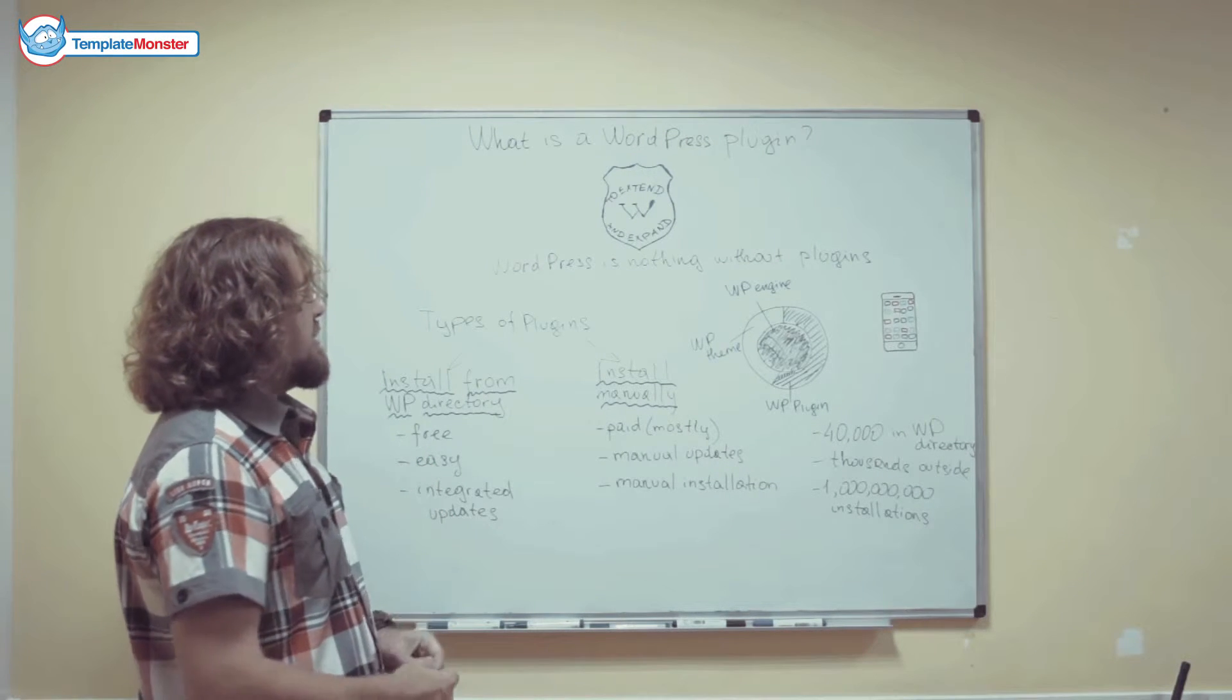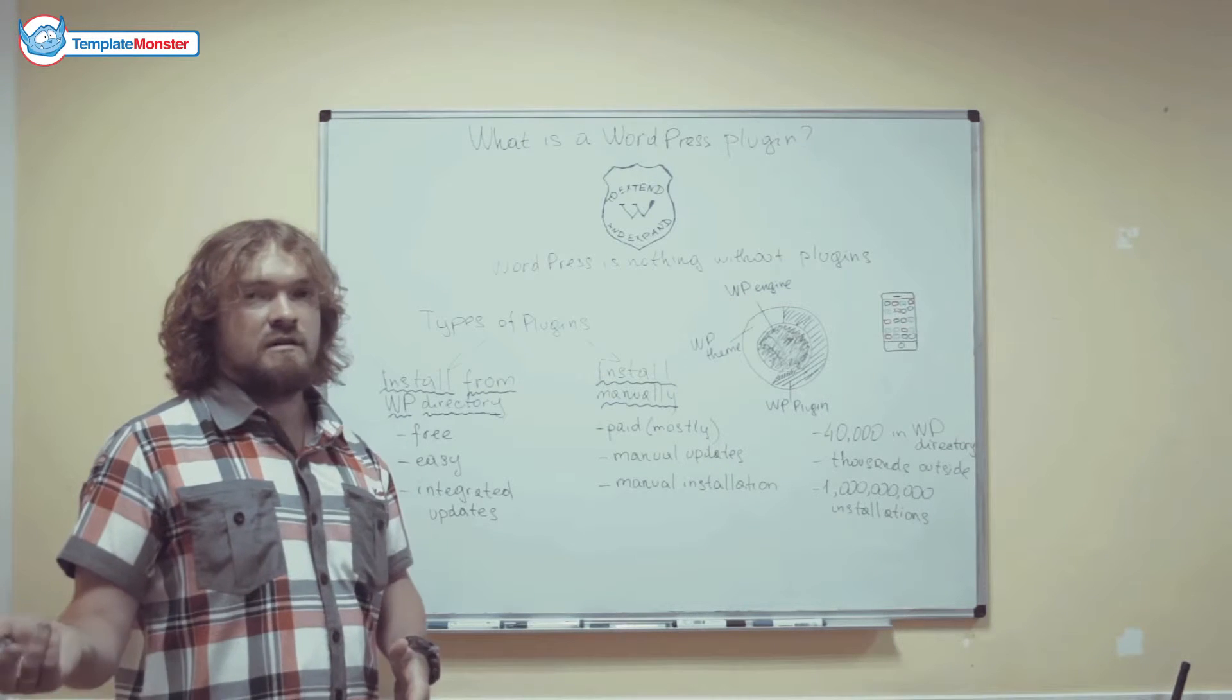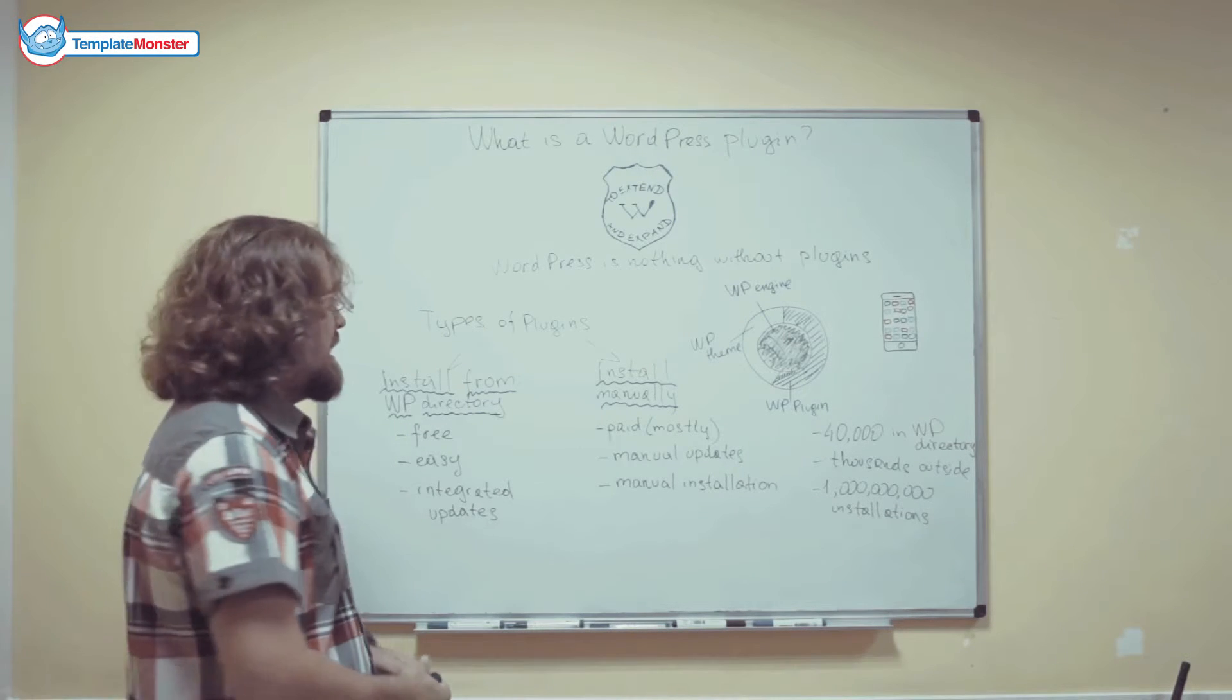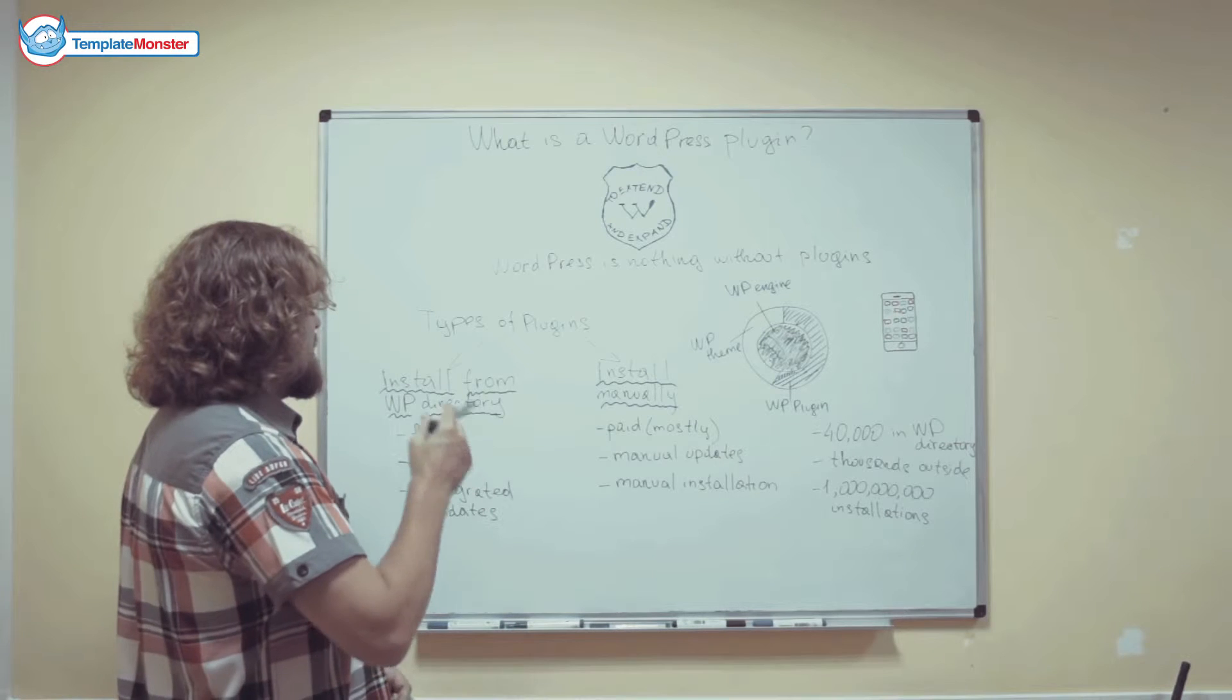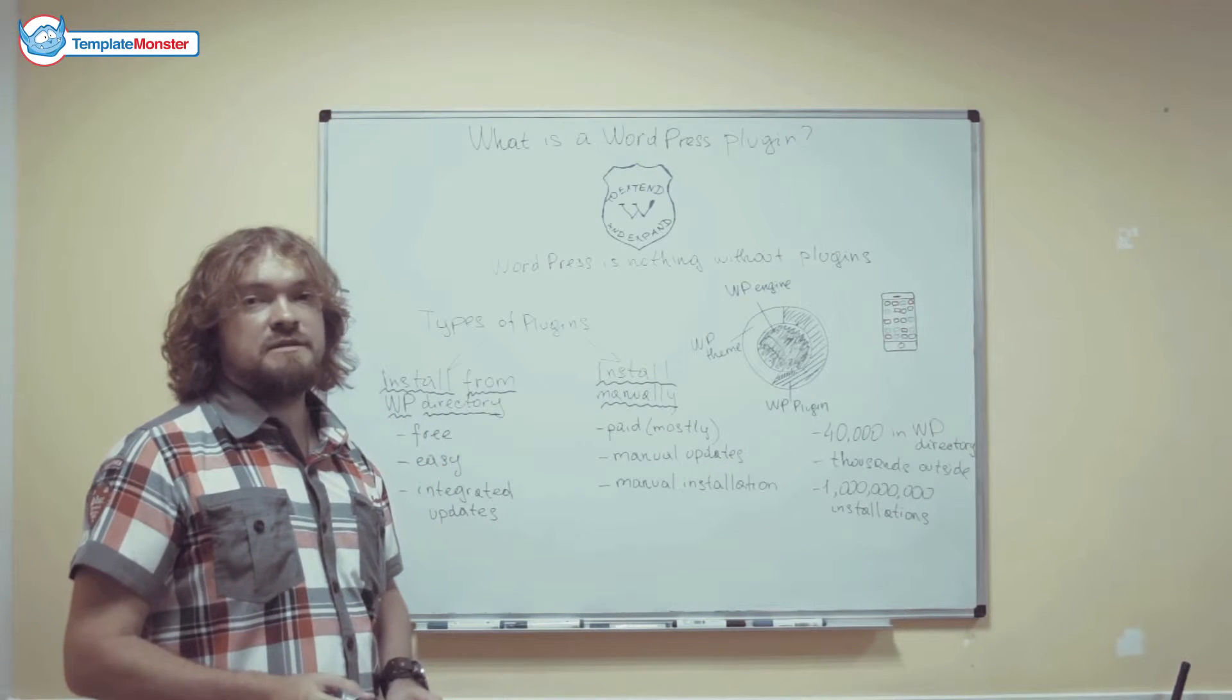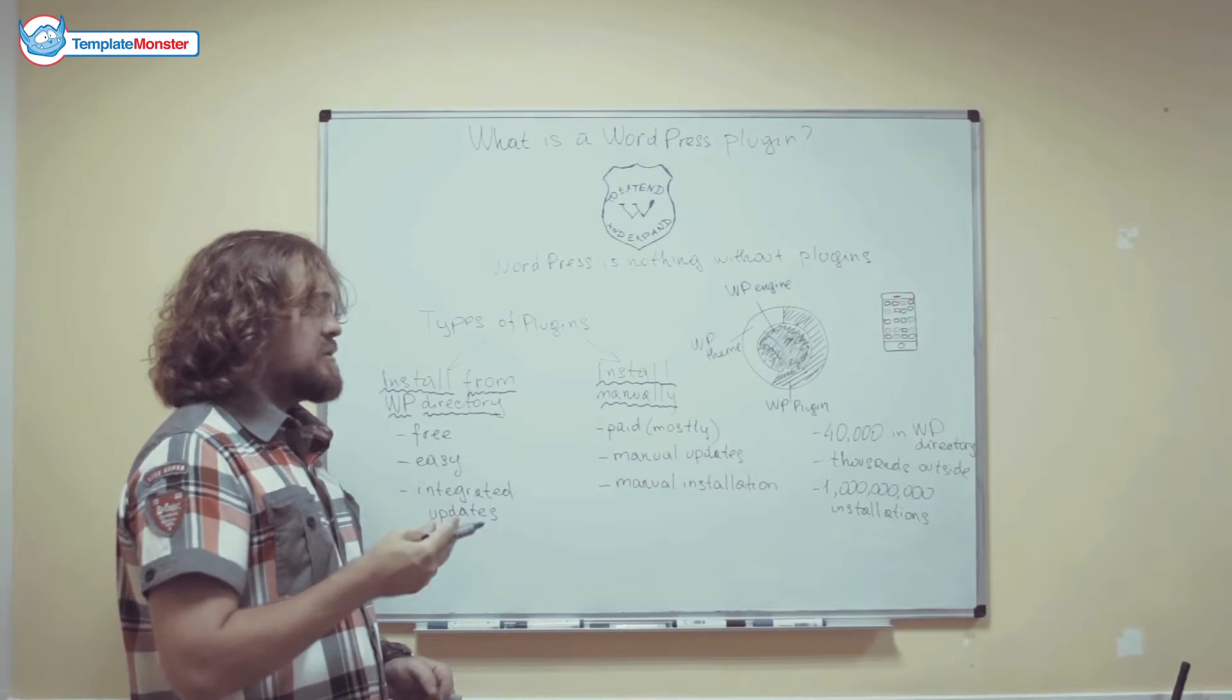There are two types of WordPress plugins based on how they can be installed. There are actually two segments of the plugins market. There are plugins that are available for the installation from the official WordPress directory. And there are plugins that are supposed to be installed manually.